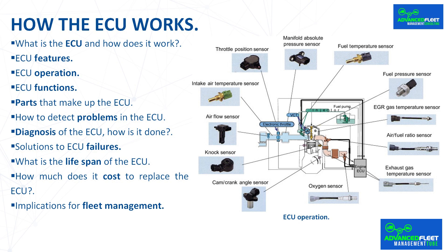How to detect problems in the ECU. It is essential to detect any problems in the ECU in time to keep the vehicle in optimal condition. Warning signs include: difficulty starting the vehicle, since the ECU controls the engine ignition process; high fuel consumption; loss of power and irregular acceleration; activation of warning lights such as the check engine light; excessive smoke emission from the exhaust, indicating combustion problems; failure of electronic accessories such as air conditioning or radio; and transmission problems — in many cars the ECU controls the transmission, so a fault could cause abrupt gear changes or loss of proper gear.